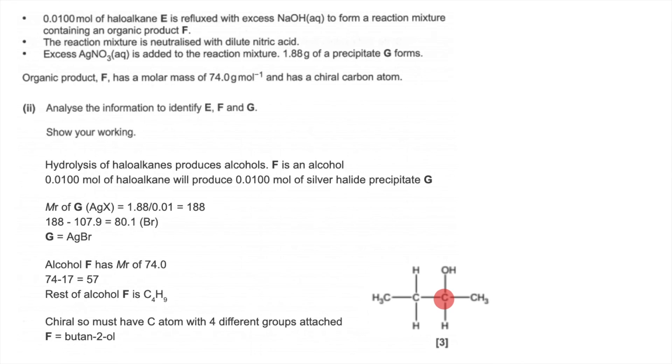So the final thing is to identify E. So remember, E reacted with sodium hydroxide to produce this alcohol here. So basically, the original molecule that this was made from must have been bromine on there. So E is 2-bromo-butane.